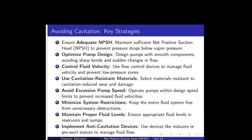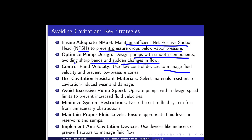To avoid cavitation, key strategies include: ensuring adequate NPSH to prevent pressure drop below vapor pressure; optimizing pump design with smooth components, avoiding sharp bends and sudden flow changes; controlling fluid velocity using flow control devices; using cavitation-resistant materials; avoiding excessive pump speed; minimizing system restrictions; maintaining proper fluid levels in reservoirs and sumps; and implementing anti-cavitation devices like inducers or pre-swirl systems to manage fluid flow.